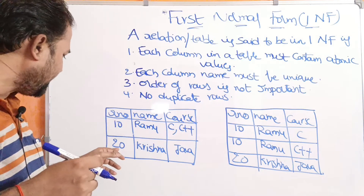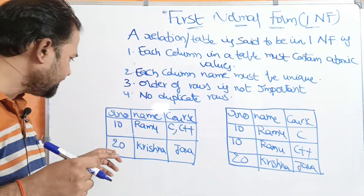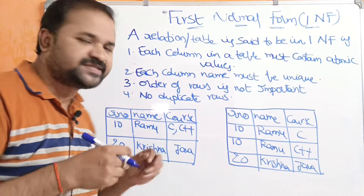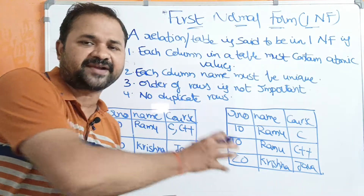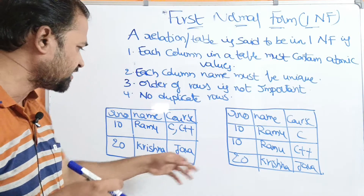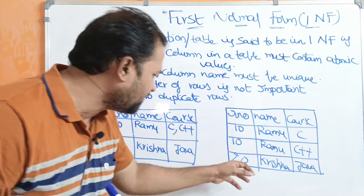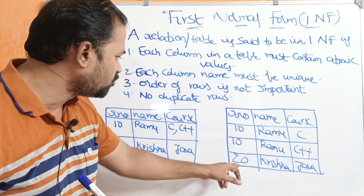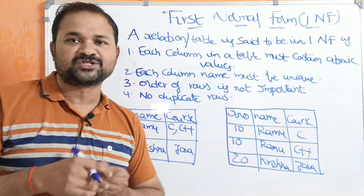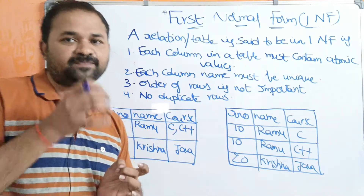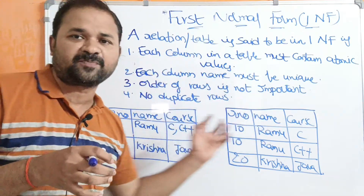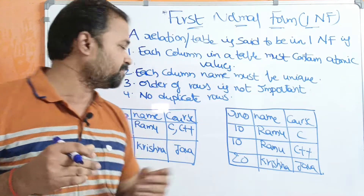For the second original record, roll number is 20, name is Krishna, and course is Java. All the attributes are atomic in nature, so there is no change. We have written that record as it is: roll number is 20, name is Krishna, course is Java. In this way, we can produce a table after applying the first normal form.